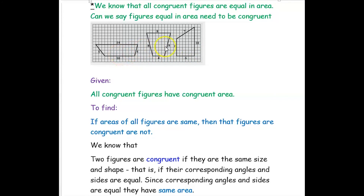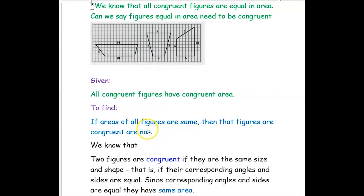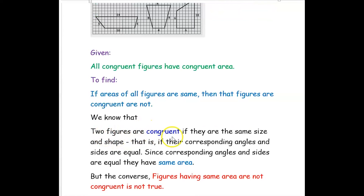Using the previous example, we know that the areas are the same but their perimeters are different. All congruent figures have equal area. But if areas of all figures are the same, are those figures congruent? We know that two figures are congruent if they are the same size and shape — that is, if their corresponding angles and sides are equal.